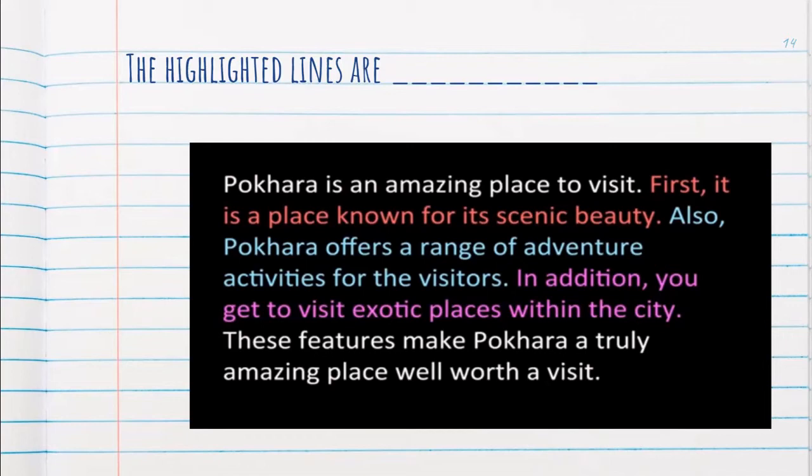The supporting sentences are all supporting the topic line that Pokhara is an amazing place to visit. The three supporting evidences are: it is known for scenic beauty, it offers a range of adventure activities, and you get to visit exotic places within the city. These back up and explain the topic sentence in detail. The final sentence — 'These features make Pokhara a truly amazing place well worth a visit' — is the concluding sentence.